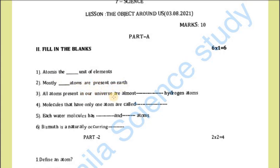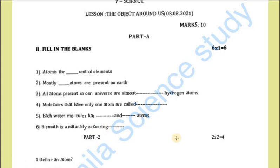Third: all atoms present in our universe are almost 74% hydrogen atoms. Fourth: molecules that have only one atom are called monatomic. Fifth: each water molecule has 1 oxygen and 2 hydrogen atoms. Finally, sixth: bismuth is a naturally occurring element.